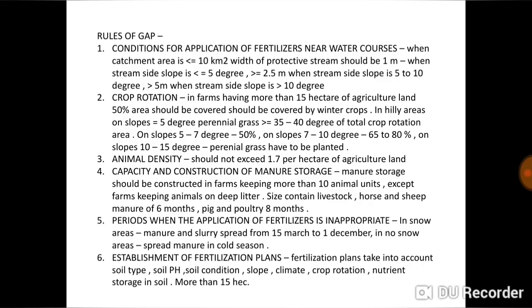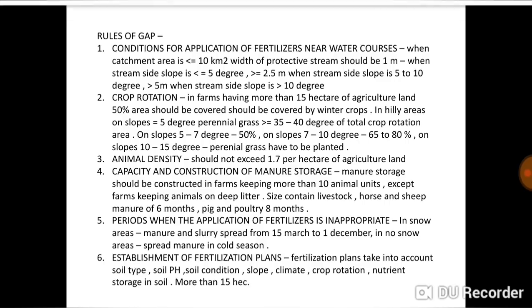GAP is basically for safe human consumption — products are provided for safe human consumption. The first rule of GAP concerns conditions for application of fertilizers near water courses. This is the water course, and this is the field. Conditions are provided about whether fertilizers or DDT-type pesticides are to be used near that water course.